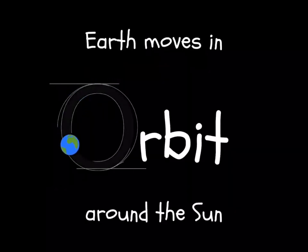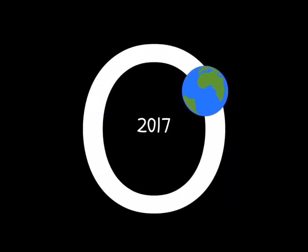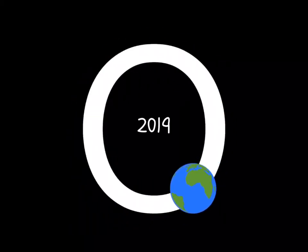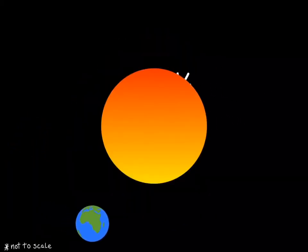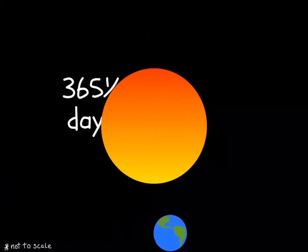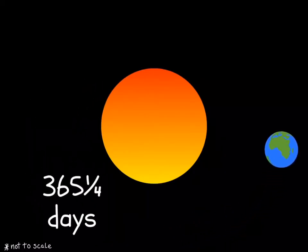Earth moves in orbit around the Sun. A full orbit takes 365 days, or one year — or to be more precise, it actually takes 365 and a quarter days.